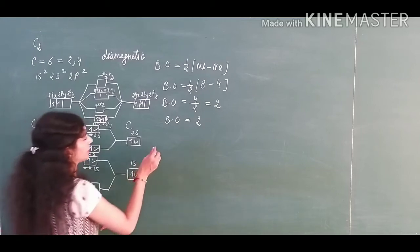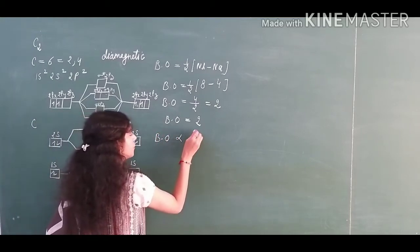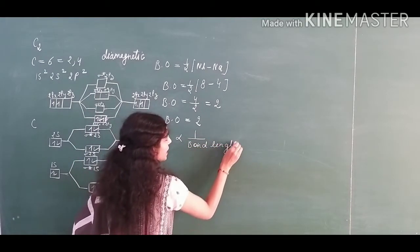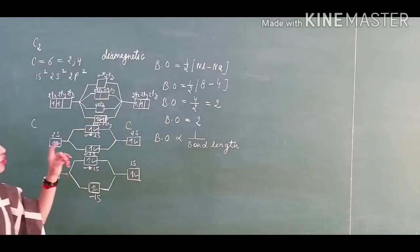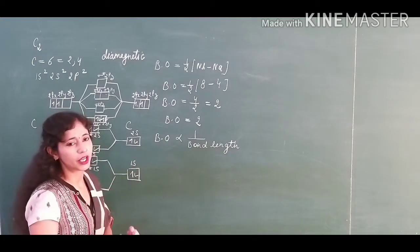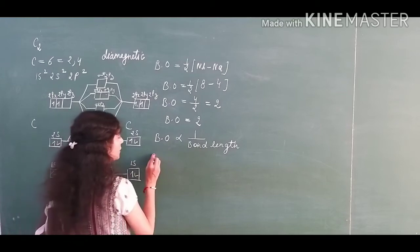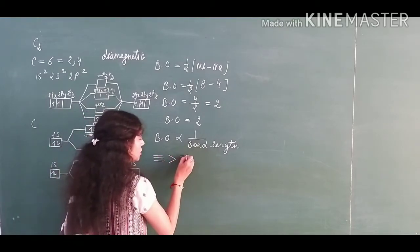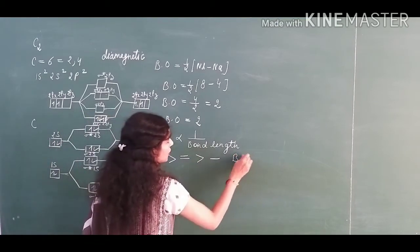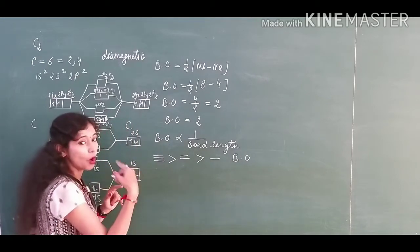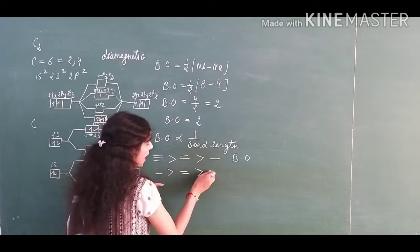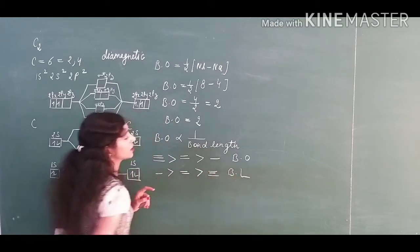Now, a few relations I am writing. Actually bond order is inversely proportional to bond length. You have to compare the molecule which is having higher bond order - its bond length will be the lesser one. Suppose you have triple bond, double bond, and single bond. This is the arrangement of bond order. And if we are asking about the bond length, single bond will be the higher one, double bond, and the triple bond will be having the lesser bond length.